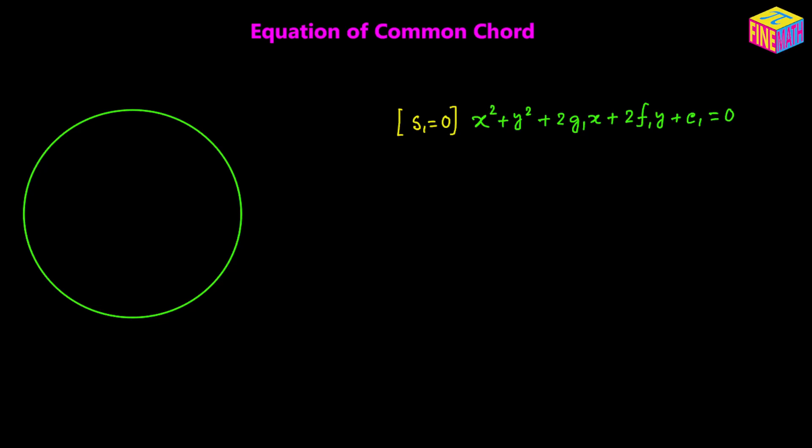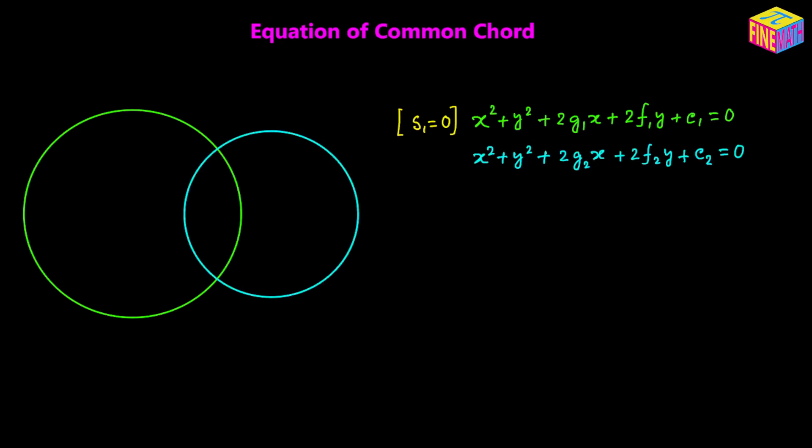Next, I am going to take another circle, and let's suppose the equation of this circle has been given as x squared plus y squared plus 2 g sub 2 x plus 2 f sub 2 y plus c sub 2 is equal to 0, and I am going to denote that as s sub 2 equals 0. The left hand side expression of the second equation is s sub 2.